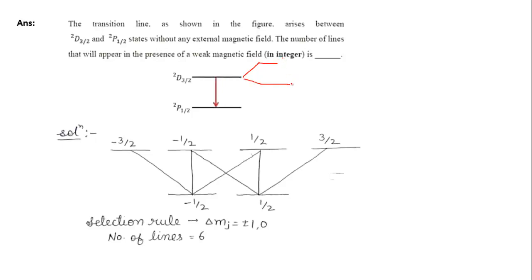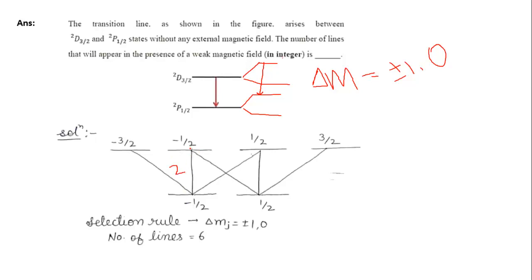The 2D3/2 level splits into m_J = +3/2, +1/2, −1/2, −3/2 — but for the transition between 2D3/2 and 2P1/2, we use the MJ sublevels. 2D3/2 gives MJ = ±3/2, ±1/2 and 2P1/2 gives MJ = ±1/2. Applying the selection rule ΔMJ = 0, ±1, we count the allowed transitions, yielding a total of 6 lines.